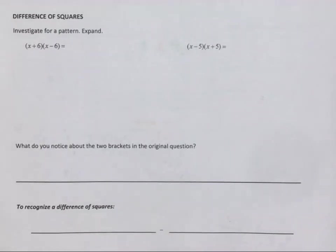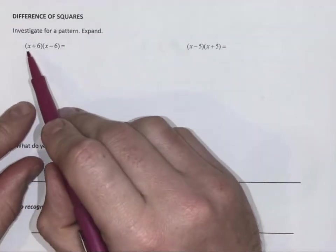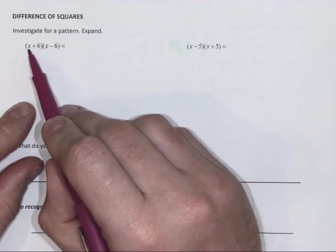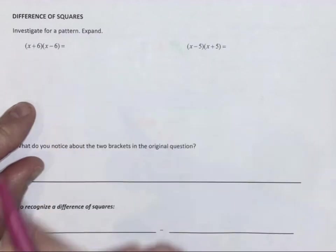A case that can arise and if we recognize the pattern is called a difference of squares. Here we have the same terms in each bracket, x and 6. One is positive, one is negative.